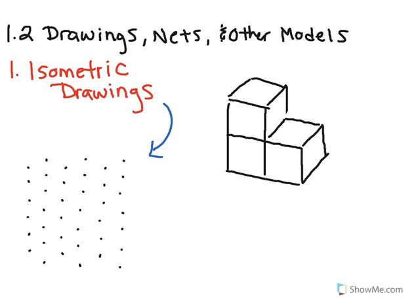There's no one way to start these — you just have to find your own way of doing it. I like to start by drawing my base. When I look at my picture, I'm going to highlight the parts I'm drawing. The very first piece is this right here — it's two blocks long. So on my isometric graph paper I'm also going to make this two dots long, starting near the bottom so I have plenty of space to work.